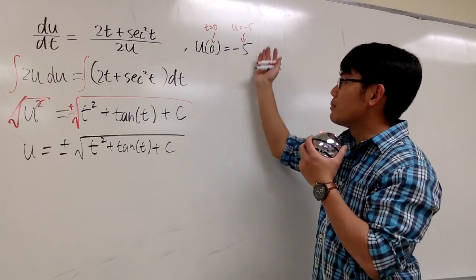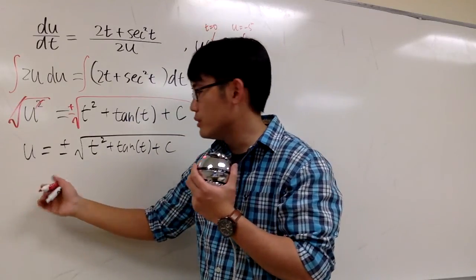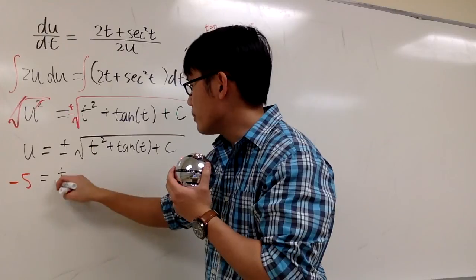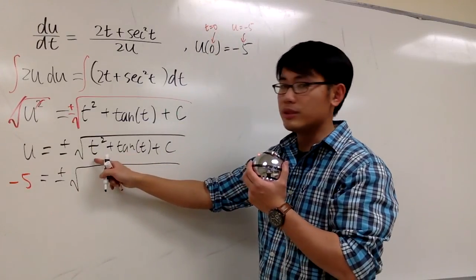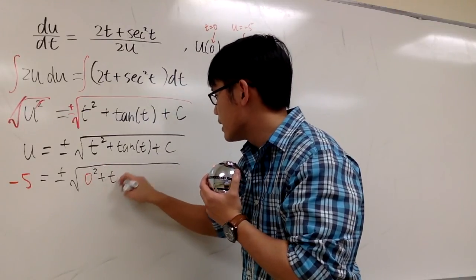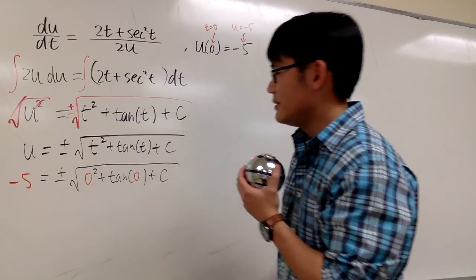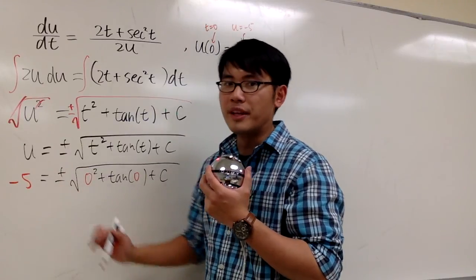So let's just plug in the values into u and t. -5 goes into the u, so let me write down -5. And this equals ±√(plugging t equals 0), that's 0² + tan(0) + c. And now, can we make a decision on should we keep the positive or should we keep the negative?